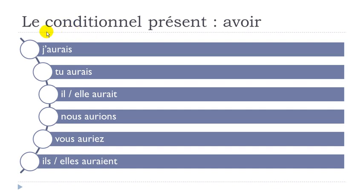So if you remember carefully, this conditionnel présent form was introduced in this unit. Check Unit 7 and then look for conditionnel présent — you will find the whole description and the whole lesson. You can see that j'aurais, if you want to translate it directly, it would be 'I would have.' In French, we've got only one form here. Take a good look at the endings: A-I-S, A-I-S, A-I-T, I-O-N-S, I-E-Z, A-I-E-N-T — the endings for the conditionnel présent form.